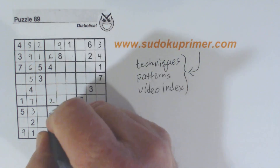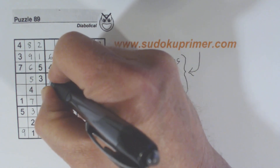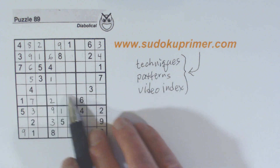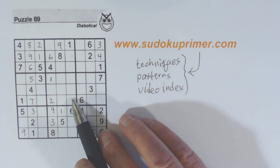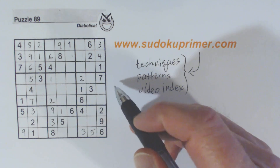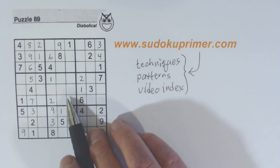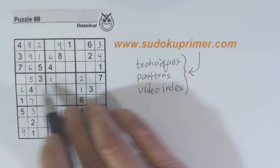Because of that nine, we can fill in the one-nine twins there in box eight. And we also know that we have a one right here. Because of that one, we've got a one here and a two there. We've got a two in box four right here — because of this two, we know that's a two right there.